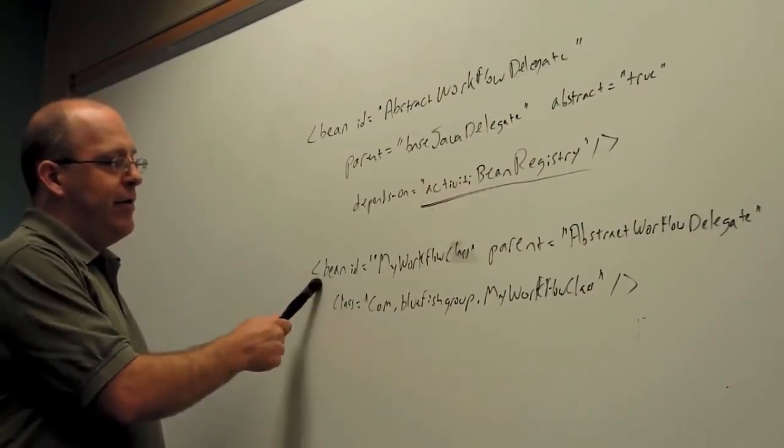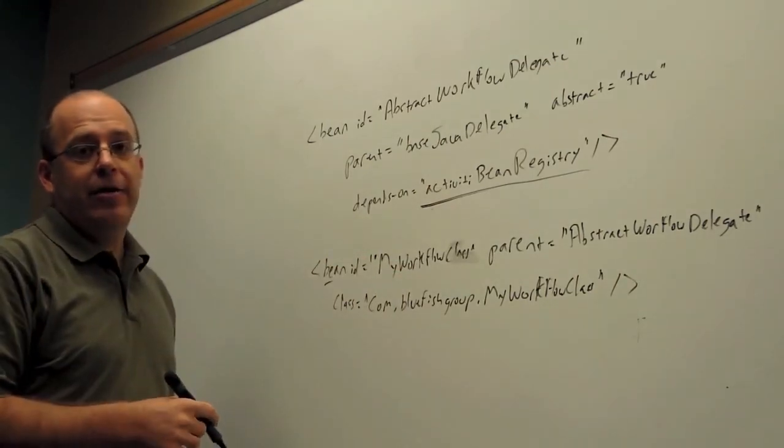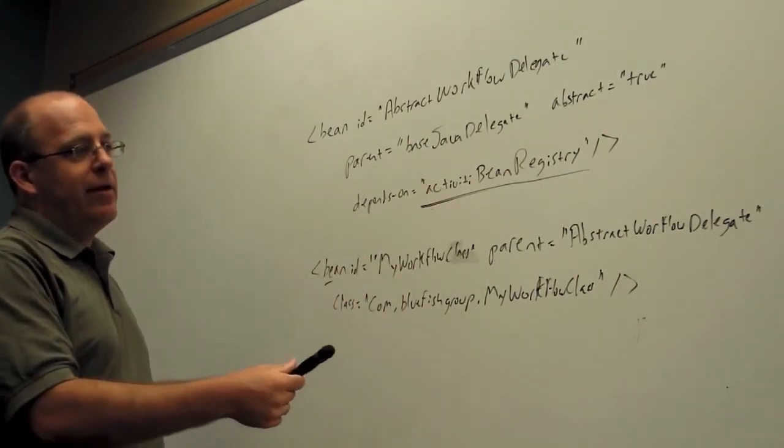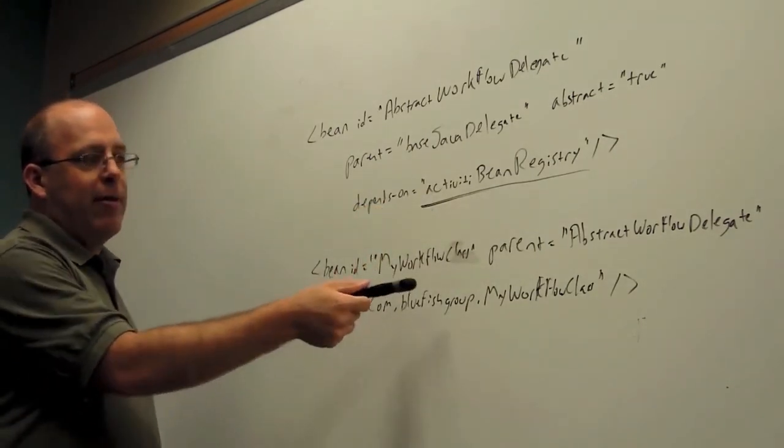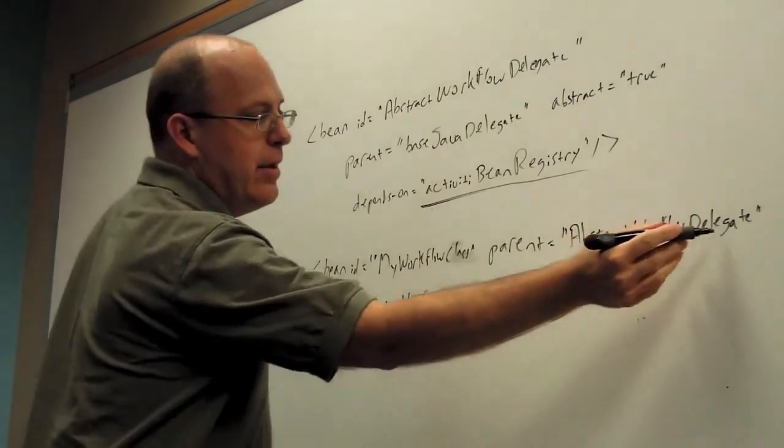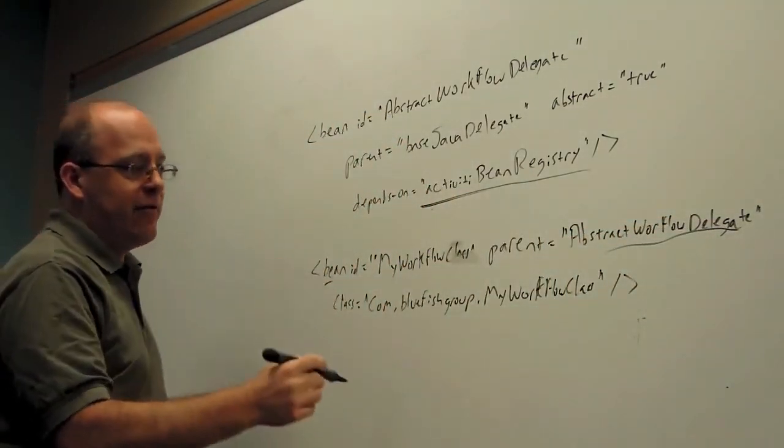Okay, so now I have this bean, my workflow class, references a class in my source code. And it's dependent on the Activity bean registry. It's important to know, even though my parent here is the abstract workflow delegate, my Java class is still extending the base Java delegate.